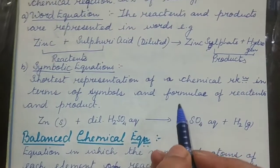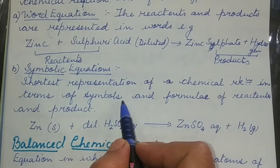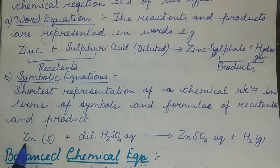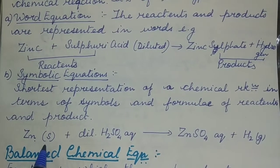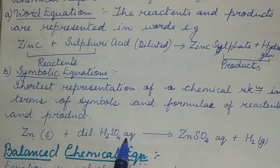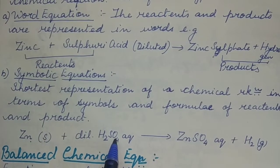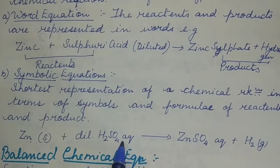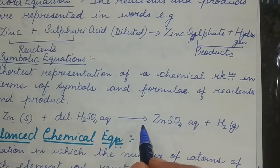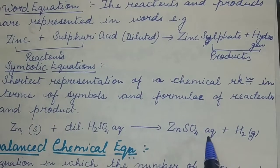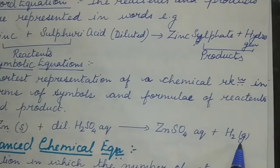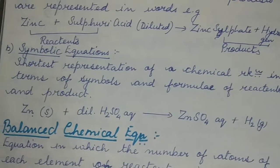For writing symbols and formulae, it is very important to have a clear concept of charges and valences to write formulae correctly. For example, in the symbolic equation: Zn(s) + H₂SO₄(aq) → ZnSO₄(aq) + H₂(g). Here 's' stands for solid, 'aq' stands for aqueous (dissolved in water), and 'g' means the substance is in the gaseous state. So you can see hydrogen escaping out in the form of small bubbles.